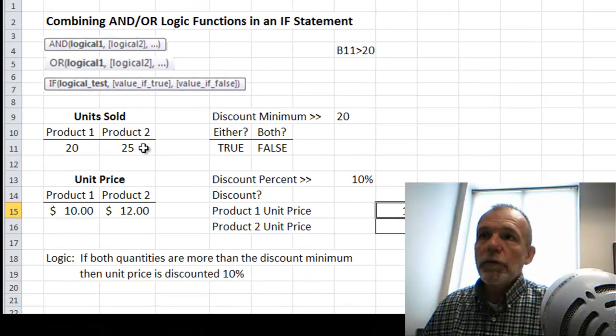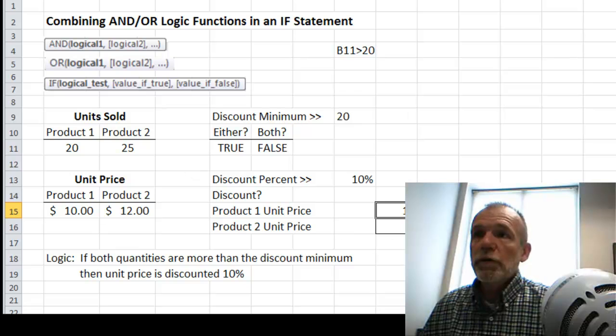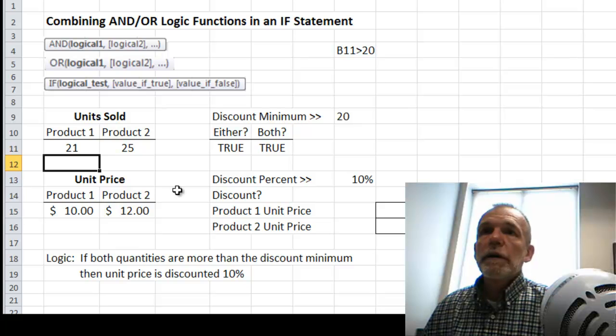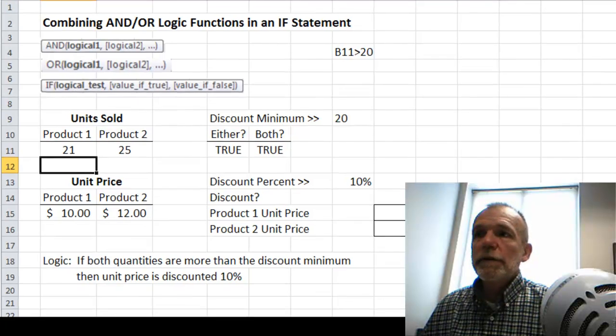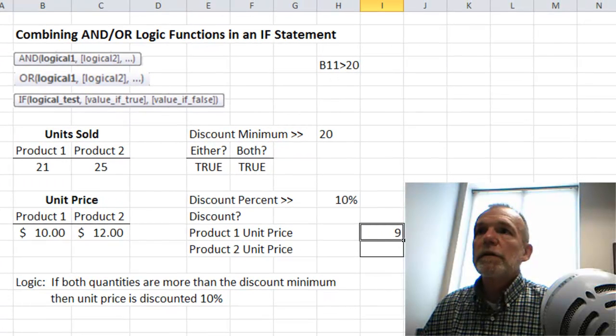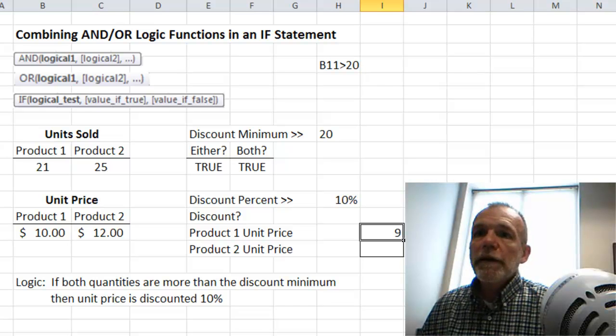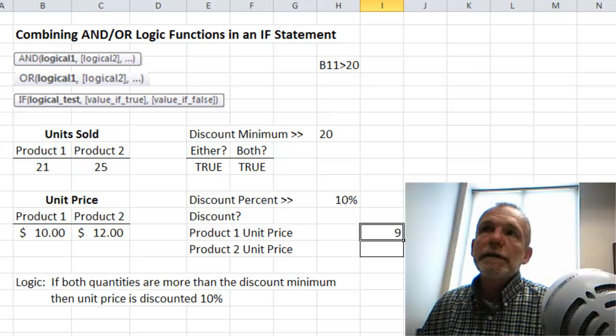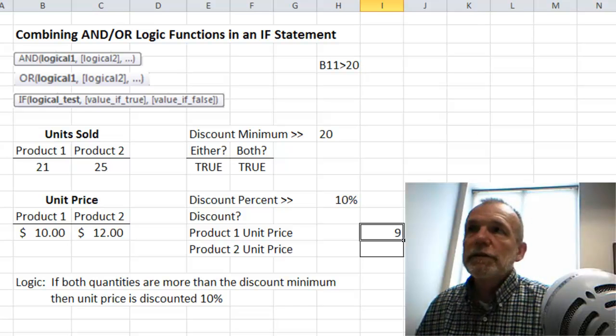You can see there, they both were not true, and so we didn't get the discount. But if we were to change this one to say 21, now the discount's available, and we can see the discounted price here. So that's a way of combining some logic and an IF statement. Thanks, see you next time.